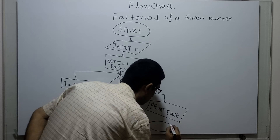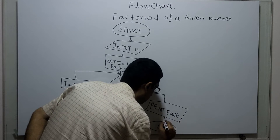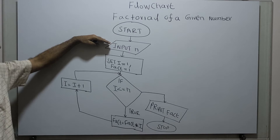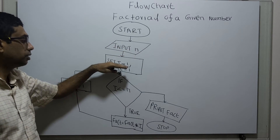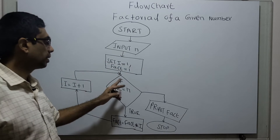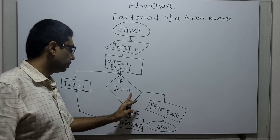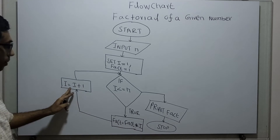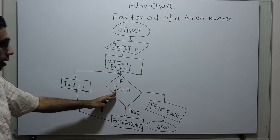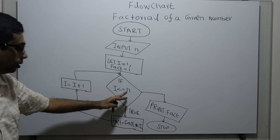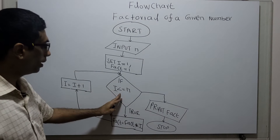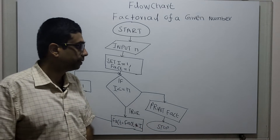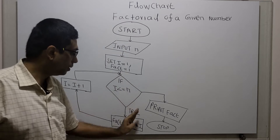This is the logical end of the flowchart. To recap: logical start, I am obtaining input n from the user, I am initializing two variables i equal to 1 and fact equal to 1. I am comparing i less than or equal to n. If true, I am calculating fact equal to fact multiplied by i and incrementing i by 1. Once i less than or equal to n is false, it will print the value in the variable fact — logical end of the flowchart. Now we will take a sample input and trace how this flowchart works.